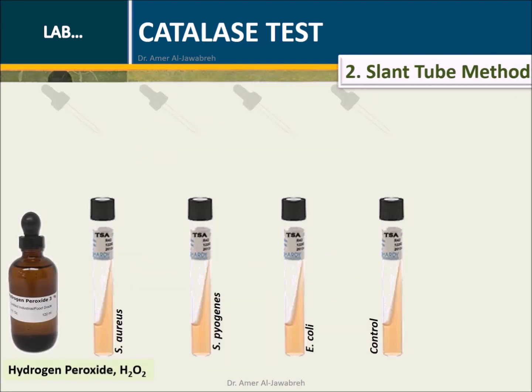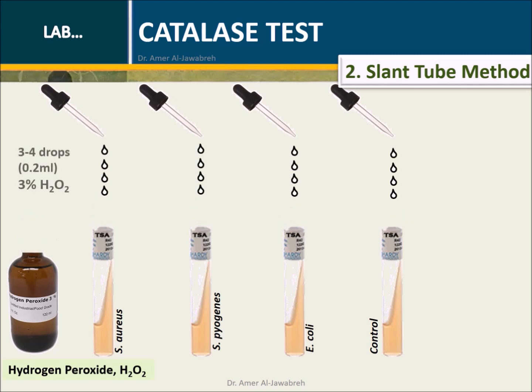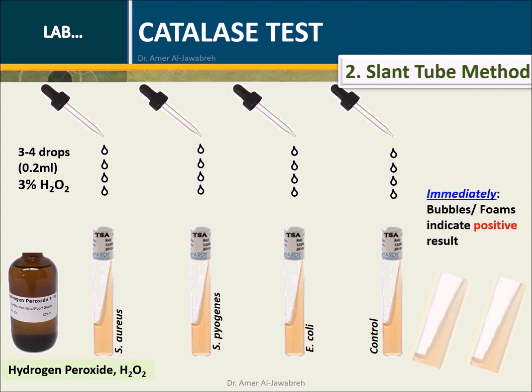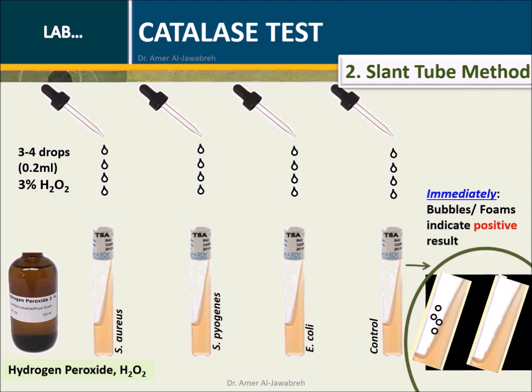Slant tube method: Prepare three slants of bacteria and a negative control with an uninoculated tube. Allow three to four drops of three percent hydrogen peroxide to flow over the entire surface of each slant culture. Observe for immediate bubble formation.